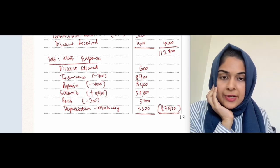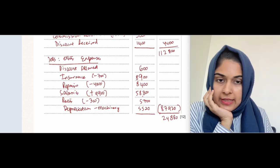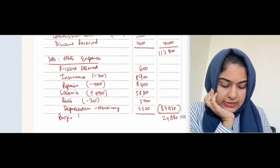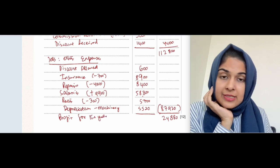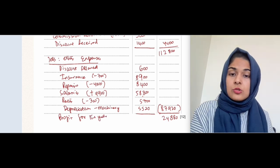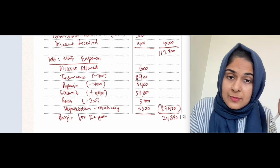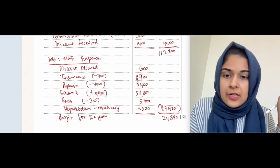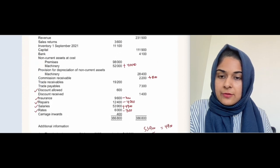112,800 minus 87,920 gives a profit for the year of 24,880. One thing to note: if there were an interest expense, we would first show profit from operations, then subtract interest expense to get profit for the year. That's the income statement complete.